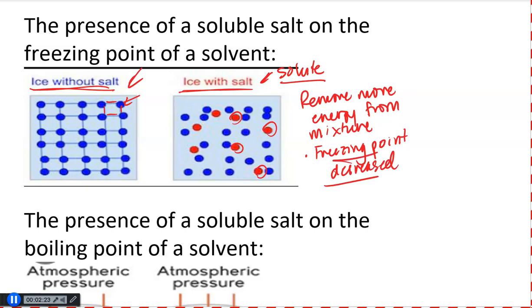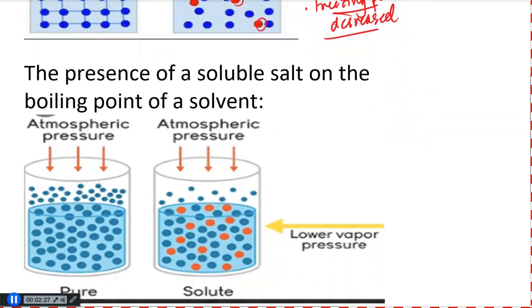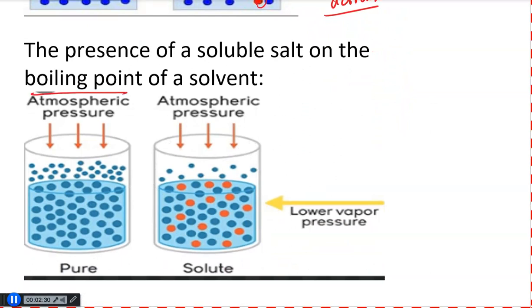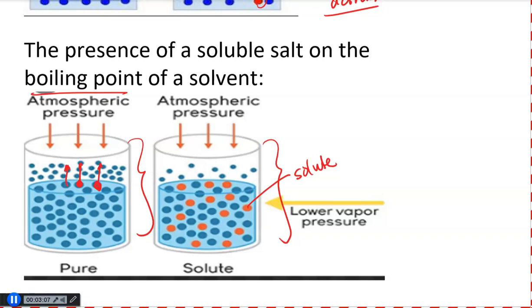This behavior where solute particles run interference is also a good model to follow when thinking about what's going to happen to the boiling point of the solvent. Once again, I have pure water in the container on the left, and water to which I've added some salt or a solute on the right. Essentially, when a solvent boils, as you increase the temperature and reach that boiling point, more and more of these water particles in the liquid phase will gather enough energy and actually escape the liquid phase entirely to enter the gas phase or vapor phase. But if we introduce a solute — again, these circles in red — notice that they also sort of run interference.